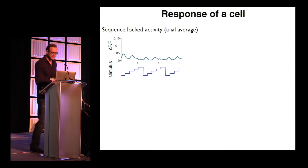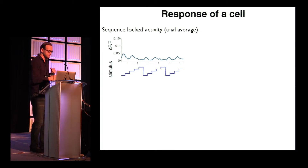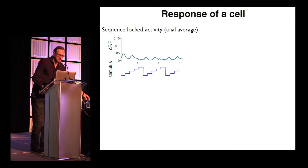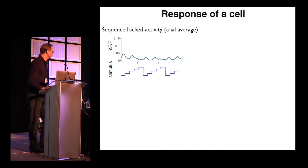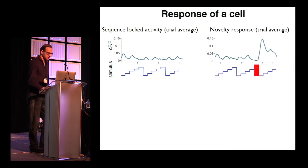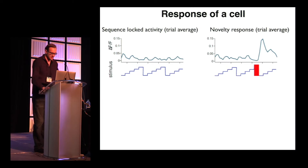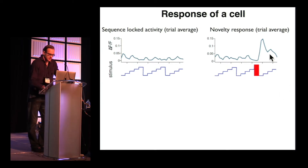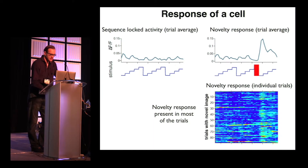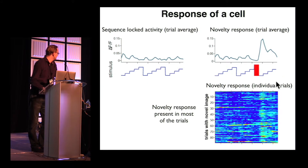With a repeated sequence, we get essentially weak stimulus-locked activity. But if we show the novel image, the cell shows a comparatively large and transient response. This is trial-averaged here. Looking at individual trials, we also see that the novelty response is present in most trials, visible here as a vertical band.